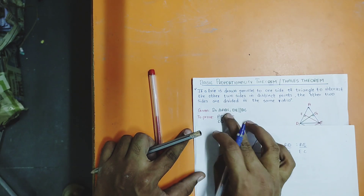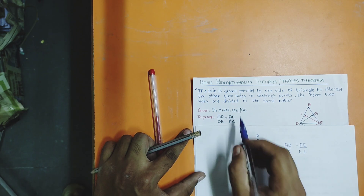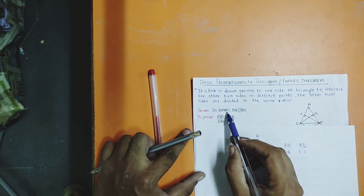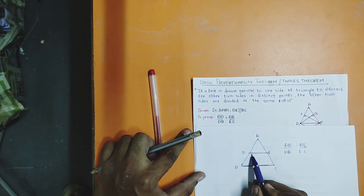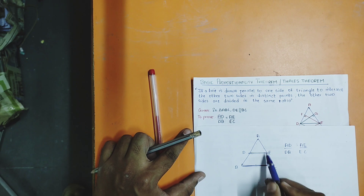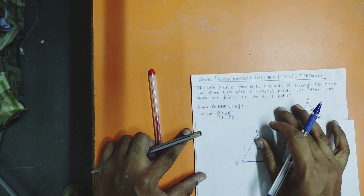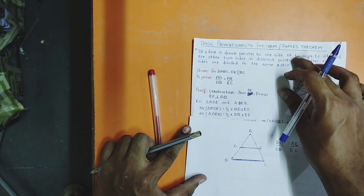Given: triangle ABC with DE parallel to BC. To prove: AD by DB equals AE by EC. Now let us go to the proof.